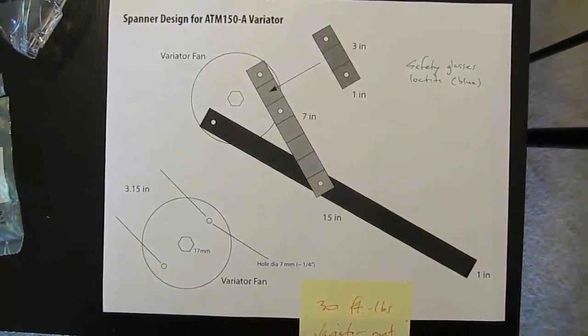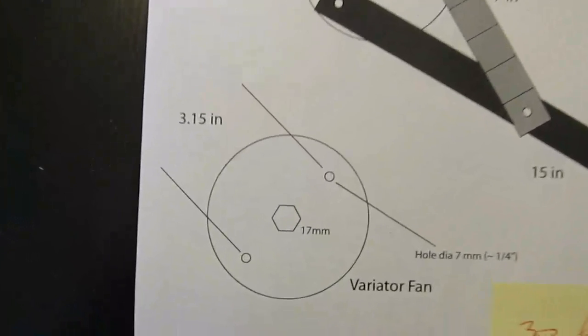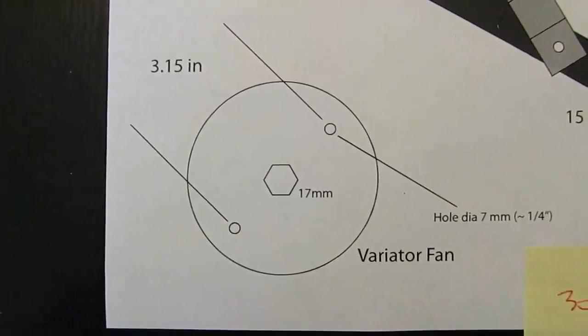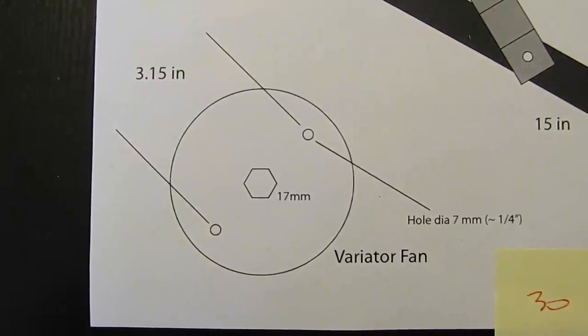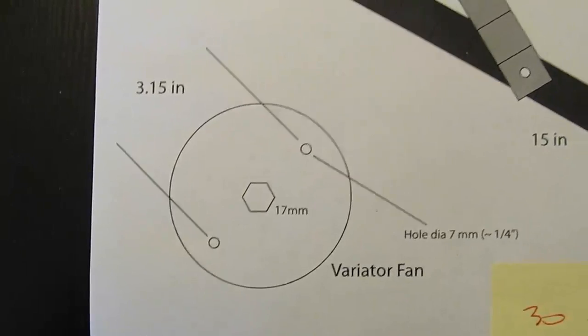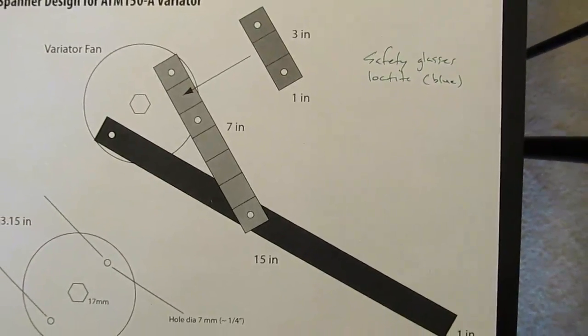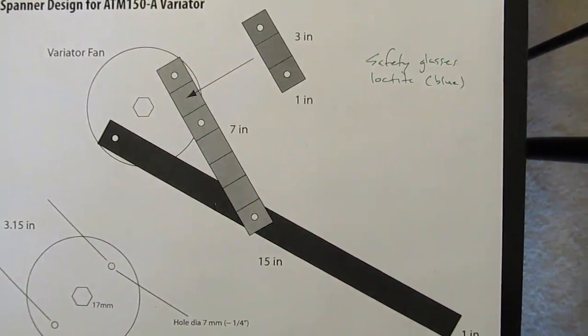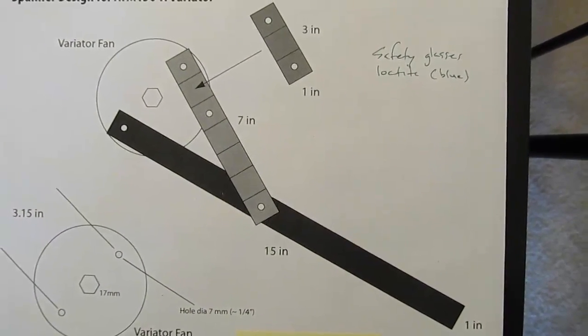Here's a diagram showing the spanner design. Here's the variator fan with the two holes for holding the spanner in place. And here's the design of the spanner. One 15 inch piece, one 7 inch piece, and one 3 inch piece of 1 inch steel square tubing.